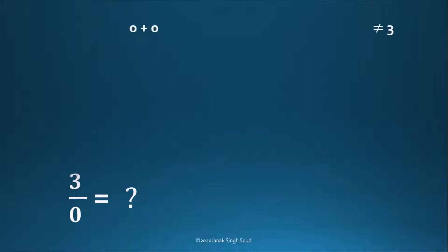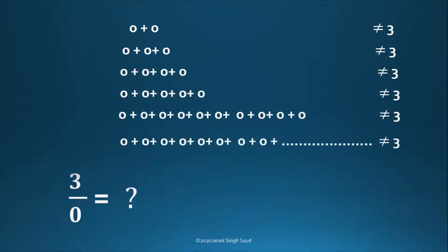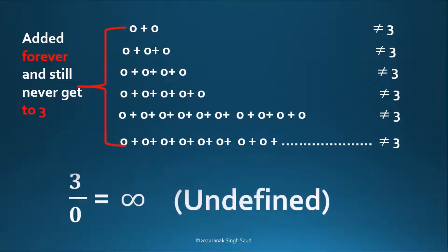2 times? 3 times? 4 times? 5 times? 10 times? 100 times? 1000 times? A million? A billion times? If you add 0 forever, you still never get to 3. So it is not possible, it is not defined, it is not allowed, it is illegal, it is meaningless.